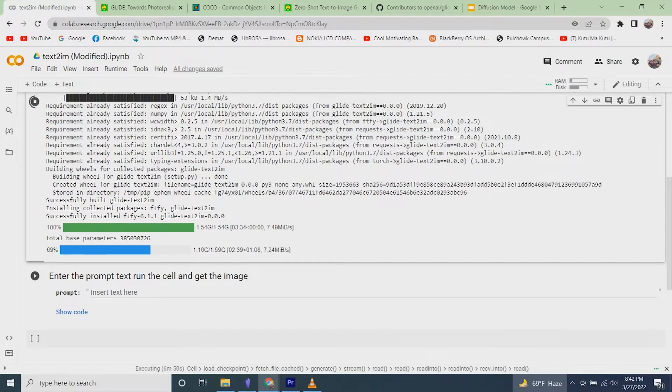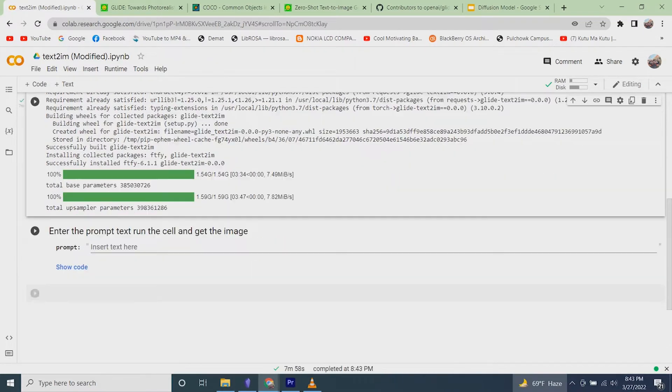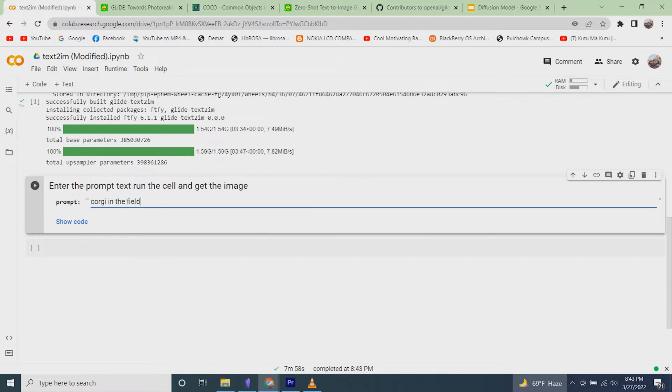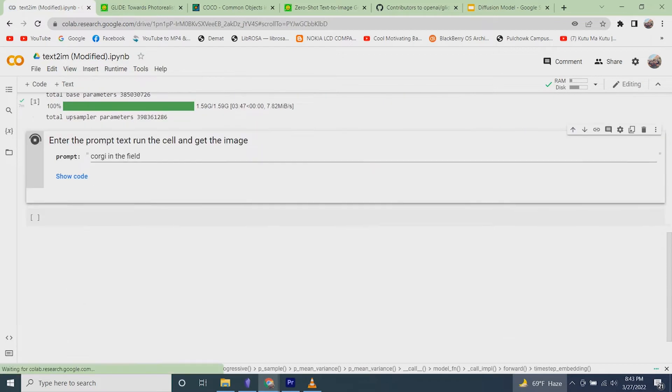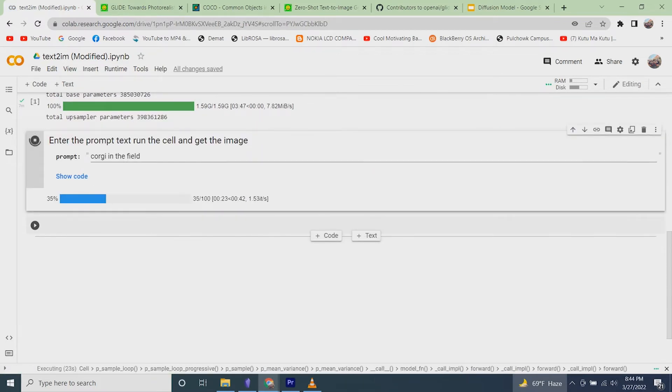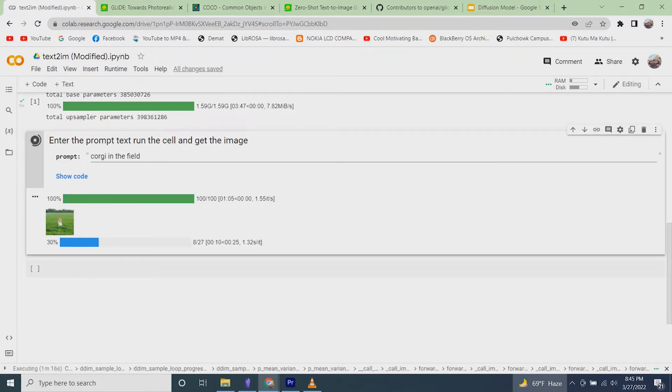After about 2 minutes, the cell should be completed. In the next cell, you need to type your prompt and execute the cell and that's it. You will first see a 64x64 pixel image, then it is upscaled to 256x256 pixels.